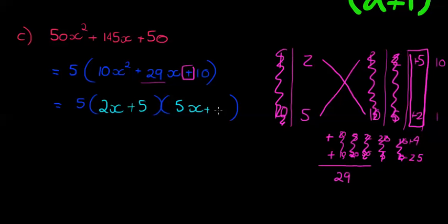So again, if I multiply these two, 2x and 5x, I get 10x squared. If I multiply the last two, I get 5. Positive 5 and positive 2 gives me positive 10. Then if I multiply the inners, I get 5 times 5x is 25x. And the outers, when I multiply 2x times 2, I get 4x. So 25x plus 4x gives me the 29x. So it does work.